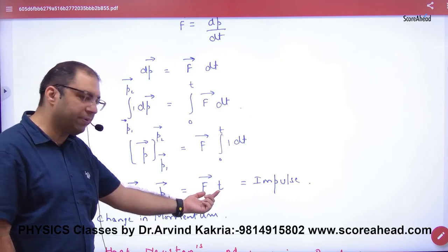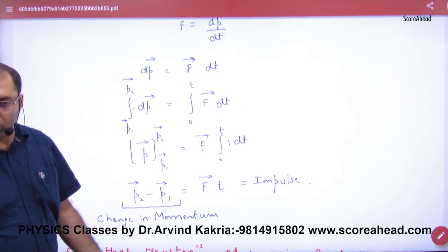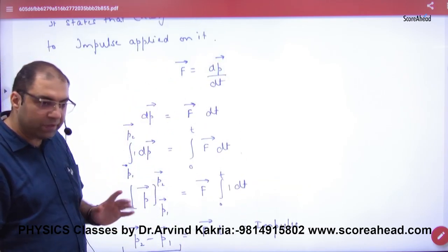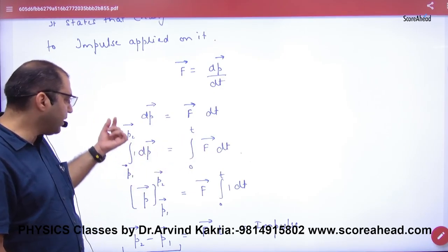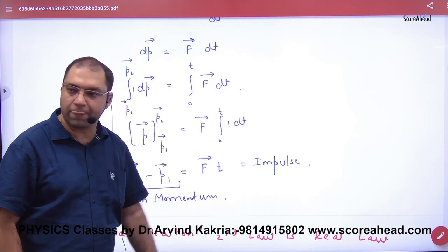This equals the impulse. So the impulse equals change of momentum. You write F equal dp by dt, cross multiply, apply time limit and momentum limit, put limits here, and you get the answer.